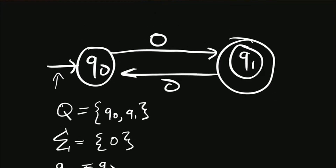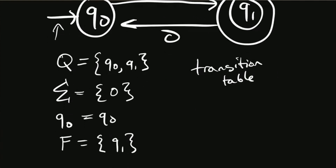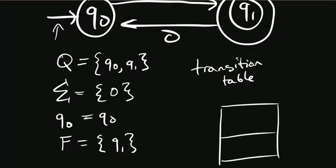Now let's get to the transition function. I'll show you a shortcut: instead of writing it out repeatedly, we use a transition table. Each row corresponds to a state and each column corresponds to an input symbol. The entry at a given row and column corresponds to the state you go to from that state on that symbol. We write a table with two rows for Q0 and Q1, and one column since there's only one symbol, zero.